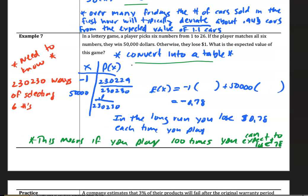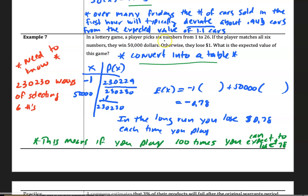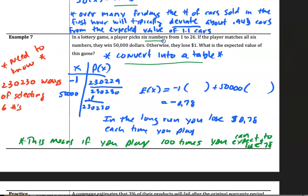And so this is related to playing the lottery, which many family members play. Let's just assume in a simple case that to win the lottery, you have to pick six numbers, and the numbers are from 1 to 26.